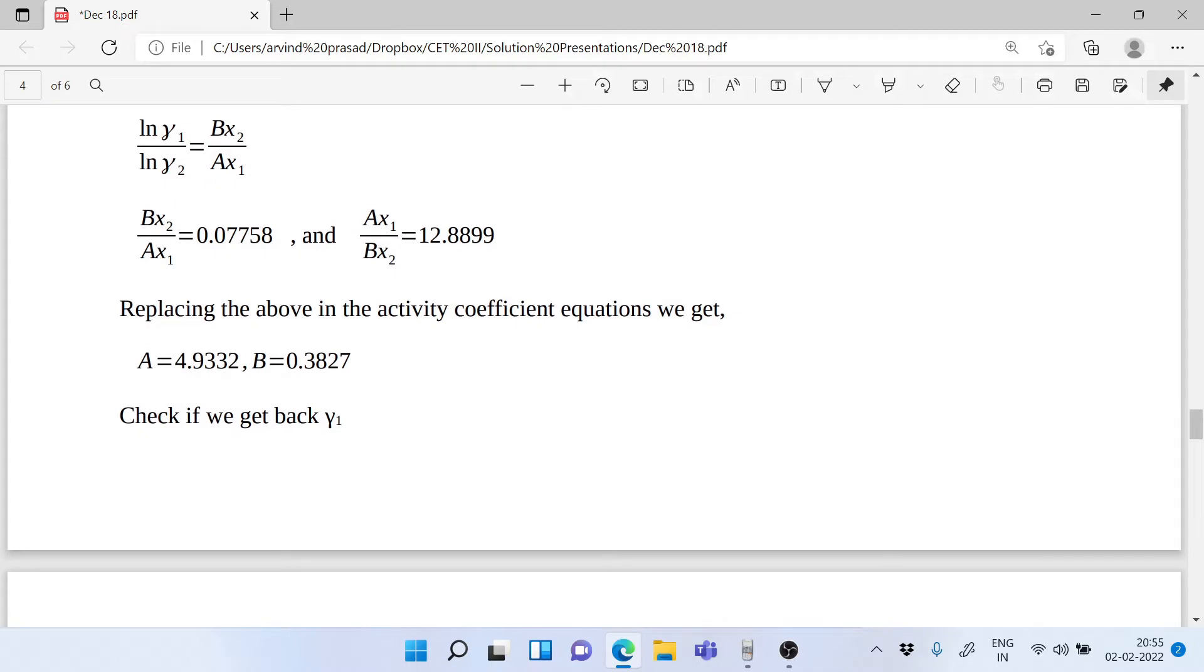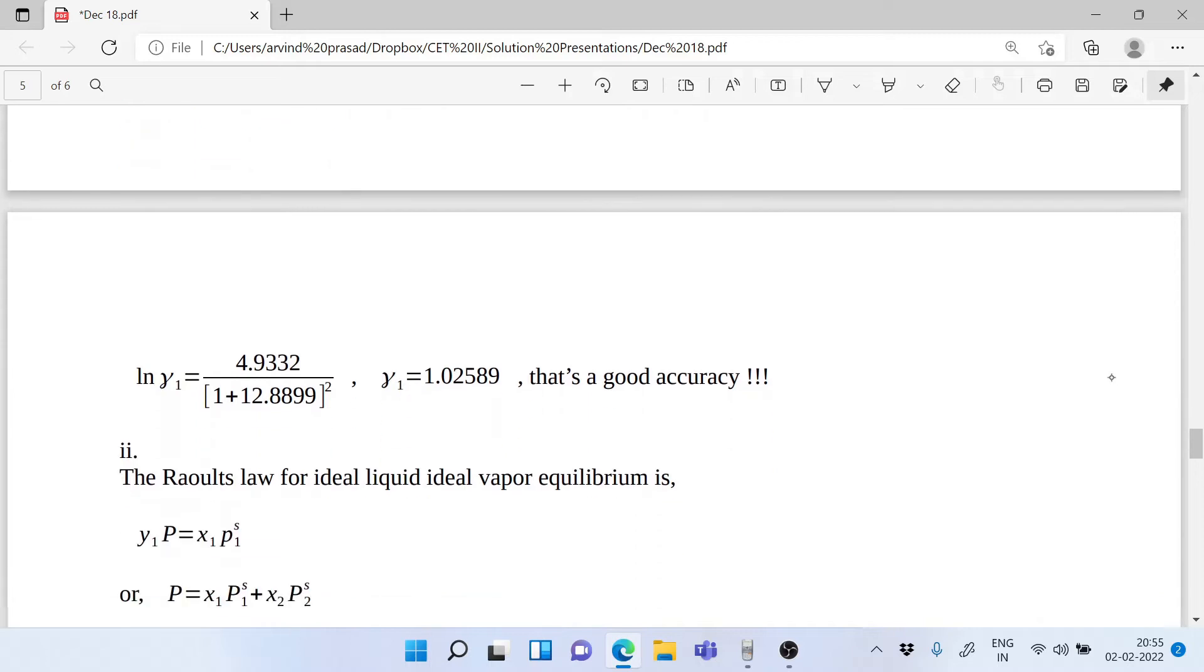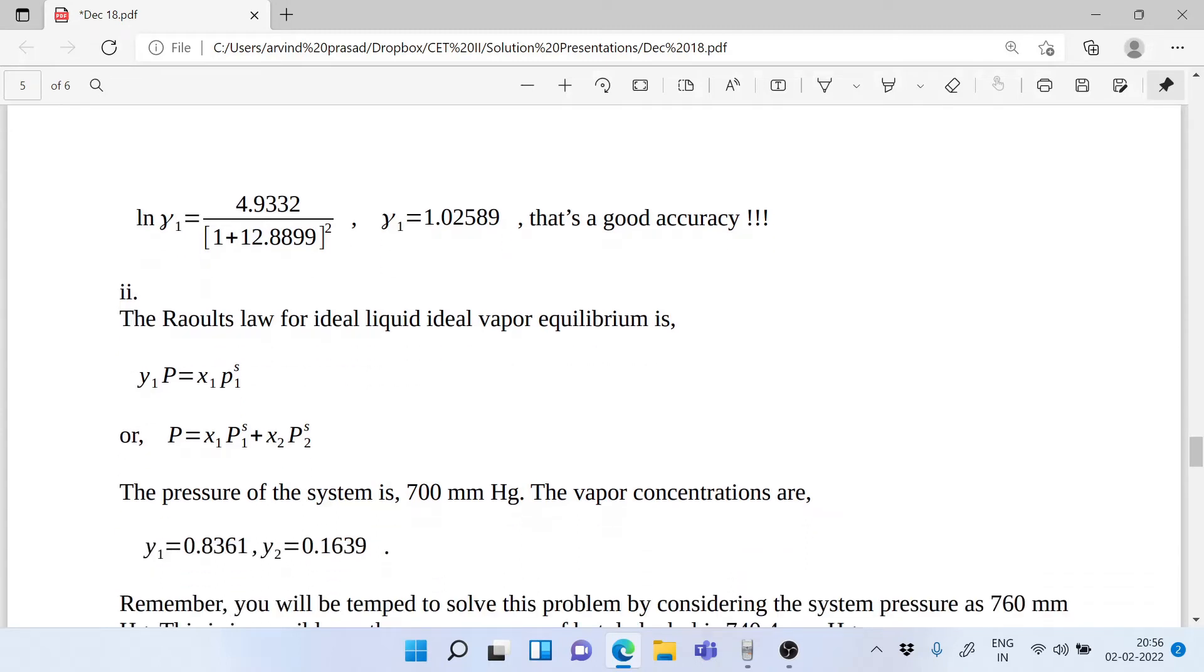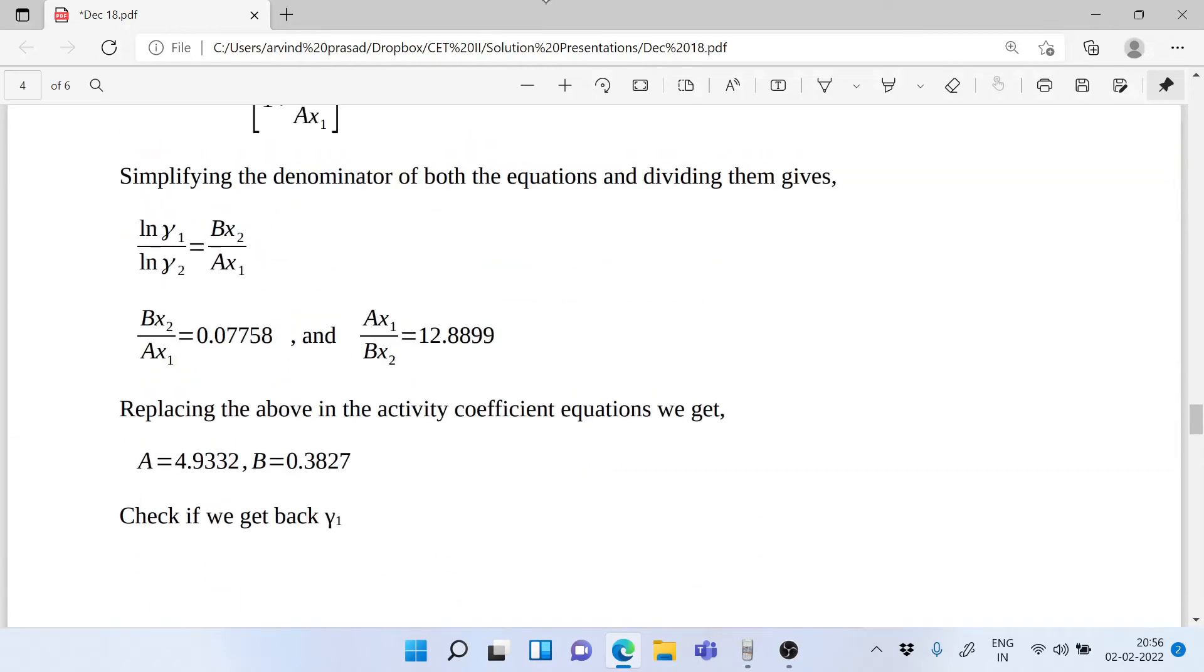Now it's very important, once you have got the value of A and B, check back whether you're getting γ₁ or not. This is a good method of finding out that you're going on the right track. So I have put the value of A and B, and you get back ln γ₁, and the accuracy as you can see is very good. γ₁ is 1.02589 and otherwise we had calculated 1.0259. A good accuracy.